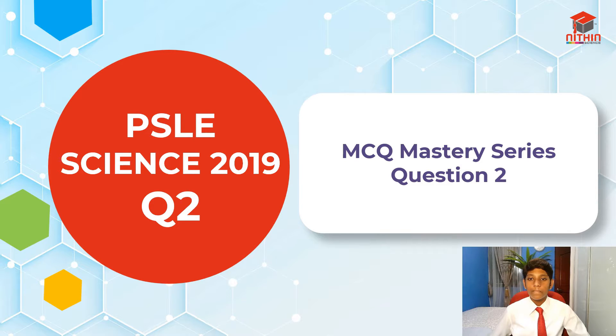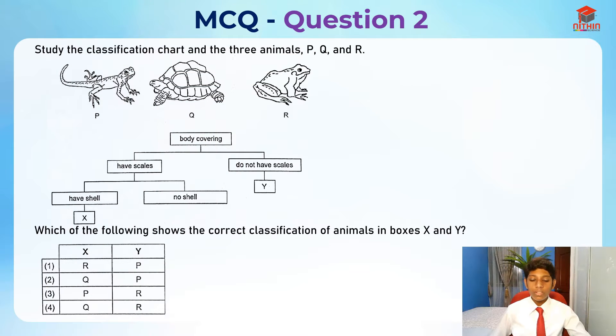Let's read the question first. Study the classification chart and the three animals P, Q, and R. P here is a lizard, Q here is a tortoise, and R is a frog. They're talking about body covering - having scales and not having scales, having shell and no shell.